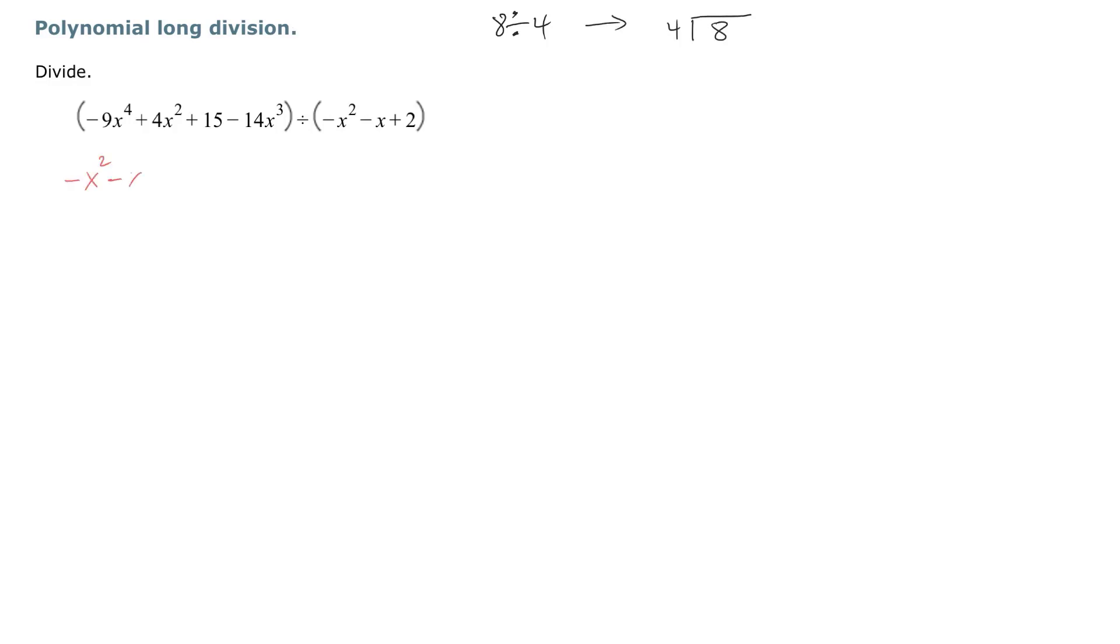And then we draw our symbol negative 9x to the fourth minus 14x to the third plus 4x squared plus 0 times x plus 15. And I'm going to draw that bar all the way to the 15, and I'm going to draw my finish line as well.